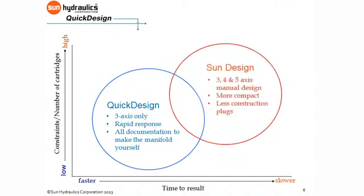If your design requires precise feature placement and size constraints, you can contact your Sun Distributor to have us manually design and manufacture it for you. Thanks to the 4 and 5-axis design techniques our manifold engineers employ, we are able to design the smallest integrated packages possible.